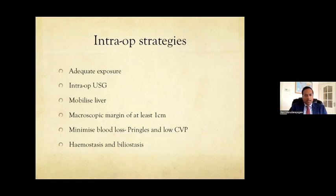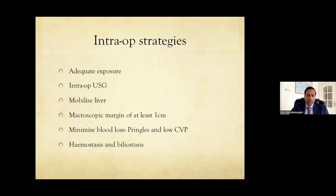Briefly on intraoperative strategies: adequate exposure is key — be liberal with the incision. We do much more laparoscopic work now, but for open surgery we use a reverse L-incision or J-incision from the epigastric region to just above the umbilicus and across to the right. Intraoperative ultrasound is a must — without it we should not be doing liver resections. It helps identify lesions, know vascular anatomy, understand the relationship of anatomy to lesions for planning, and identify any new lesions.